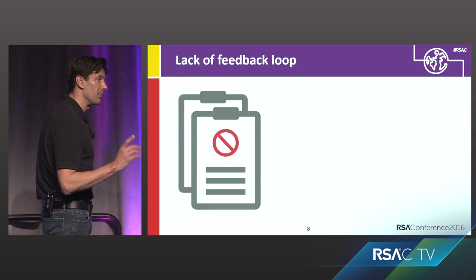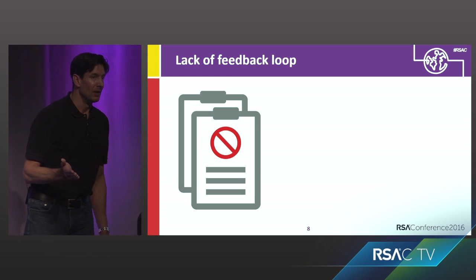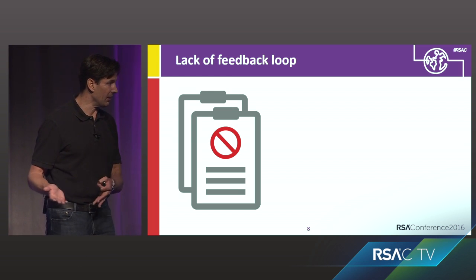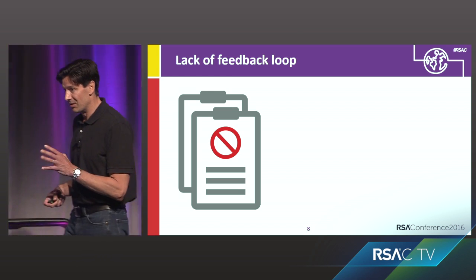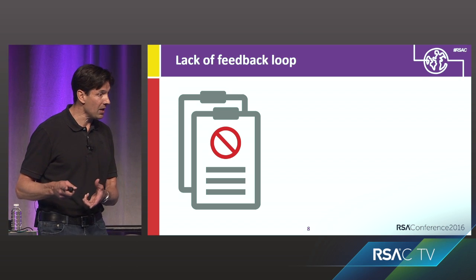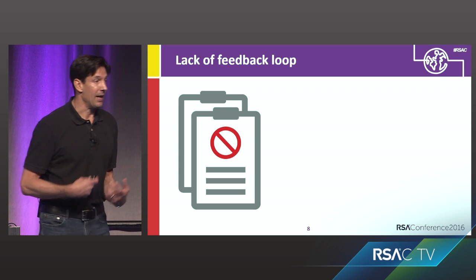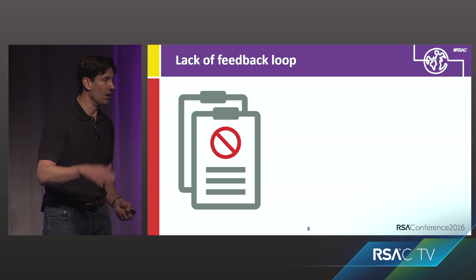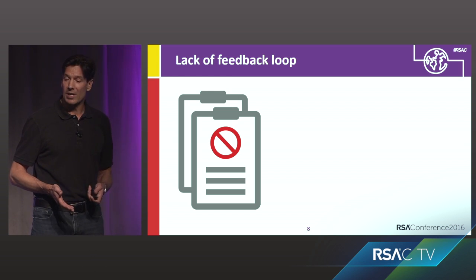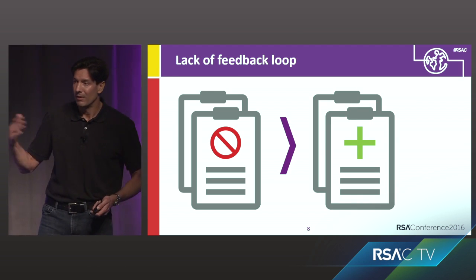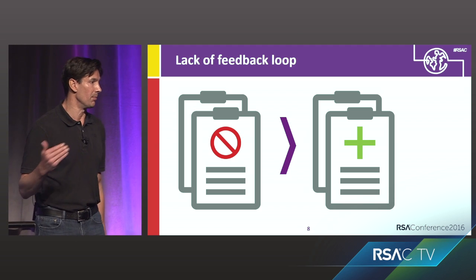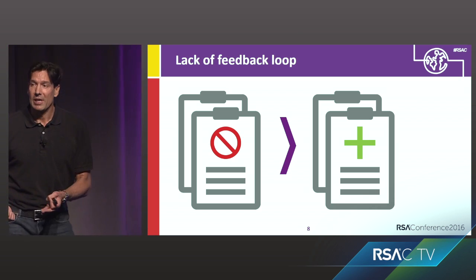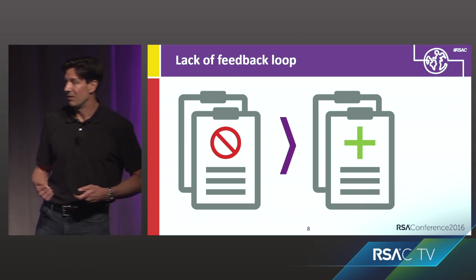Another problem is there's no feedback loop. The security analyst doing triage on events might decide a particular event is anomalous or not based on the rules, but when they determine something is a false negative, false positive, or true positive, that doesn't get fed back into the rule system — that information is effectively lost. What you'd really want is a system that automatically feeds back that information into the automatic generation of rules to make the system better and more accurate.